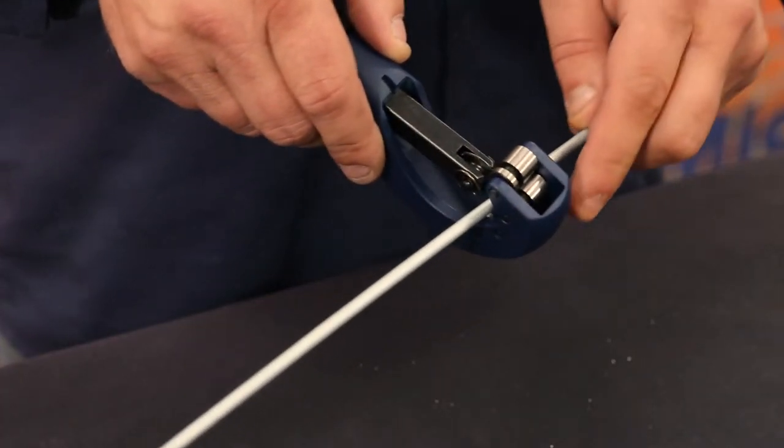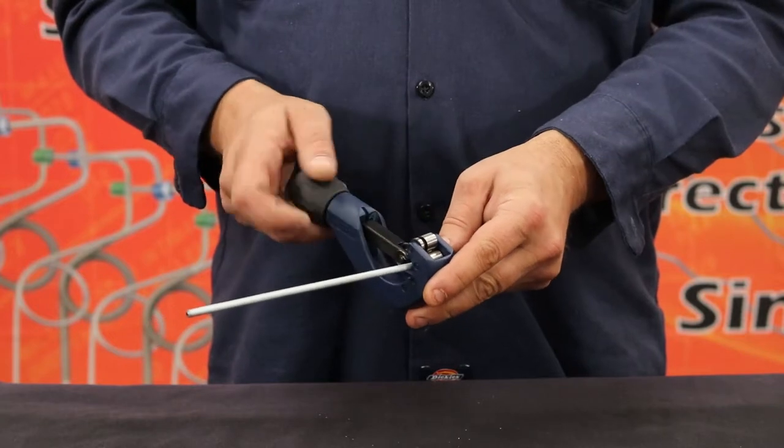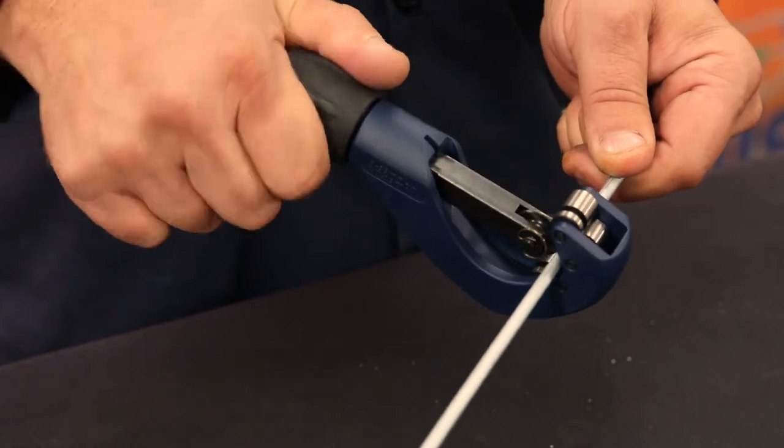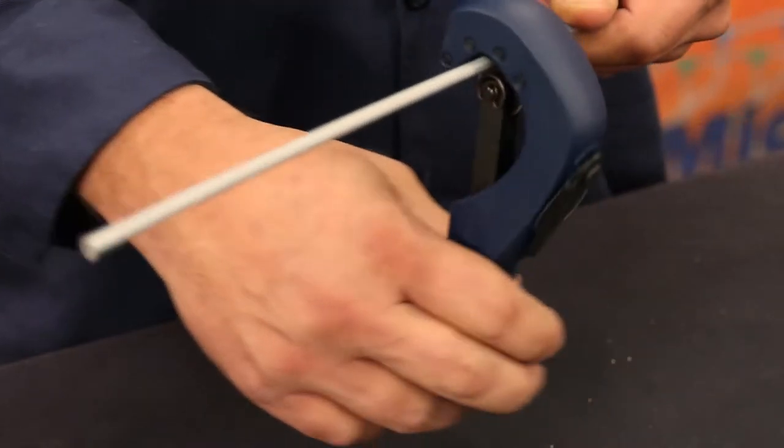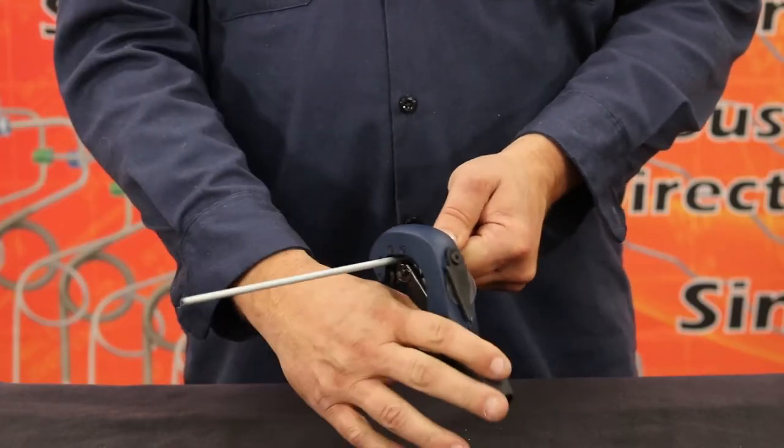The first step in prepping the tube is to cut the tubing using a tube cutter. The tube cutter wheel will create a clean cut. As you rotate the cutter around the tubing, turn the handle an eighth to a quarter turn at a time until the cut is complete.